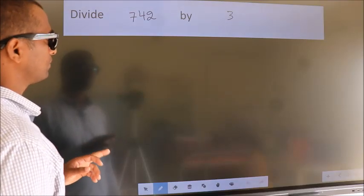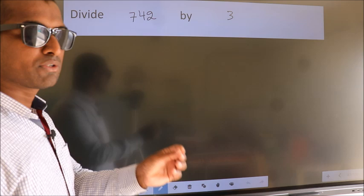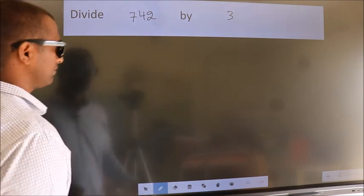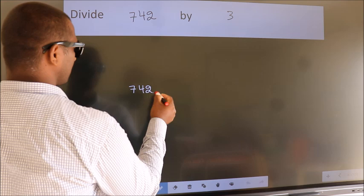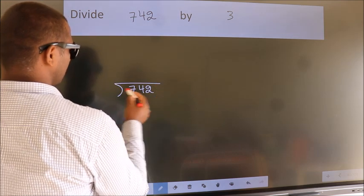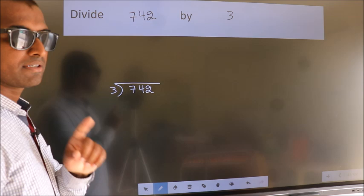Divide 742 by 3. To do this division, we should frame it in this way: 742 here, 3 here. This is step 1.